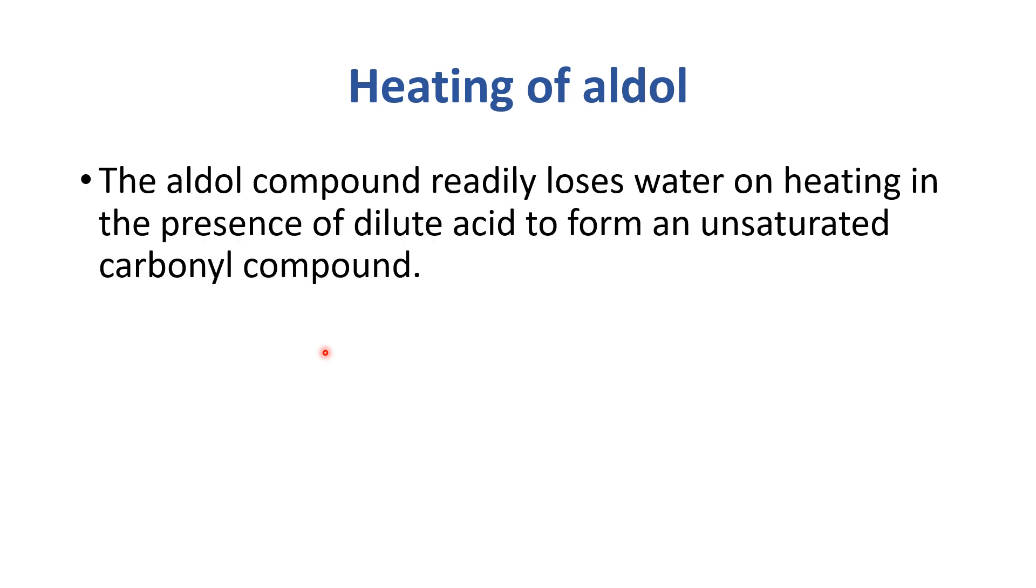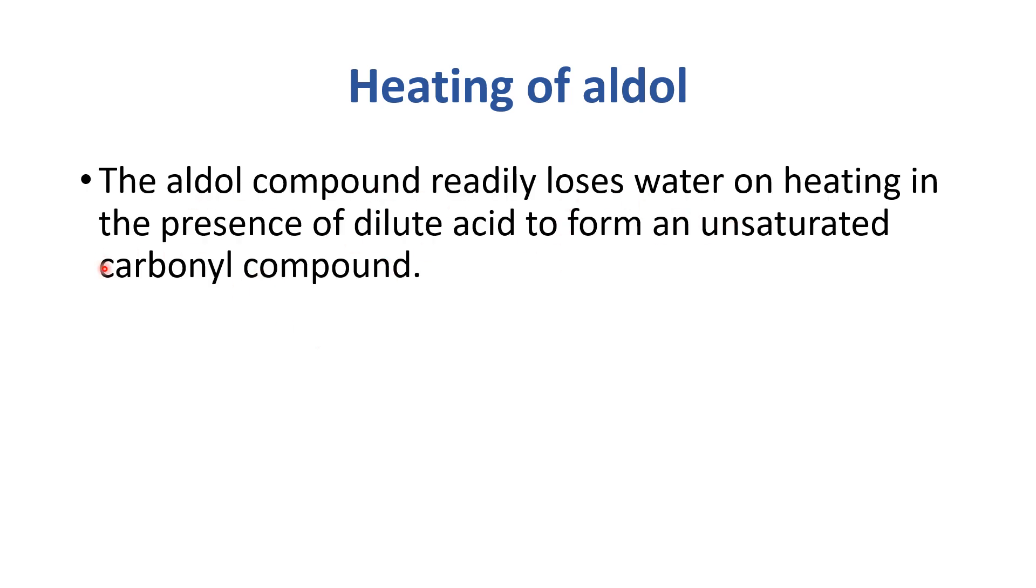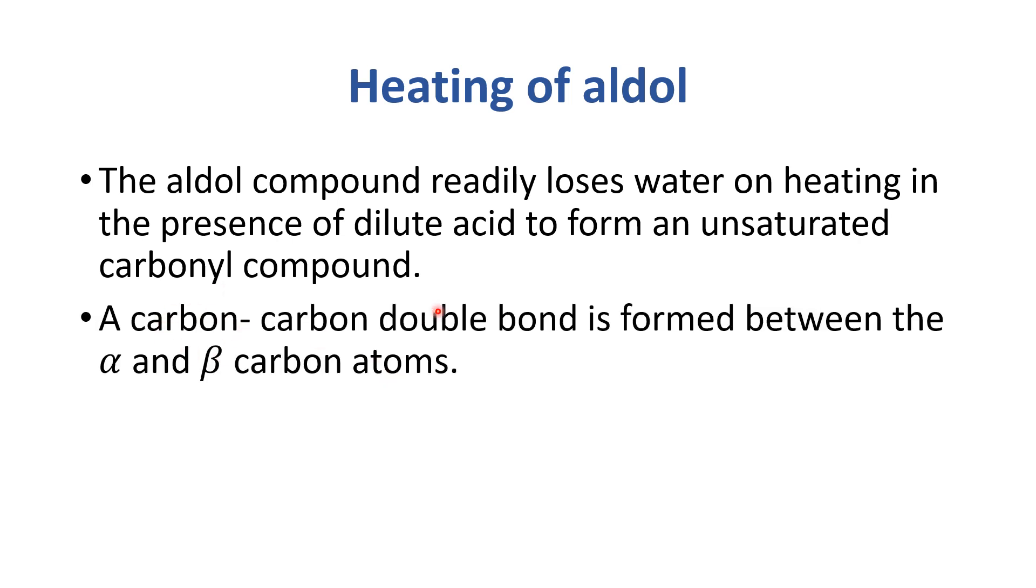Next is heating of an aldol. The aldol compound readily loses water on heating in the presence of dilute acid to form an unsaturated carbonyl compound. A carbon-carbon double bond is formed between the alpha and beta carbon atoms. So here we have an aldol that is 3-hydroxybutanal. There were two aldehyde molecules that were condensed. When you heat it in the presence of an acid, the alpha and beta carbon atoms form a double bond and we get unsaturated carbonyl compound. And its name is propenal aldehyde.